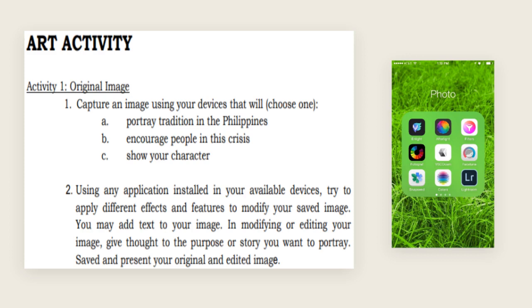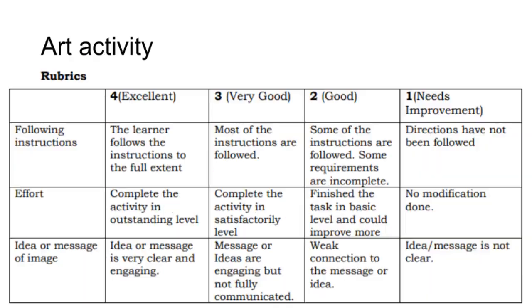Save and present your original and edited image. Art activity rubrics — Following Instructions: 4 points (Excellent) for the effort for completing the activity; Outstanding level: 4 points — the idea or message is very clear and engaging. 4 points is the highest score. The whole activity is worth 12 points.